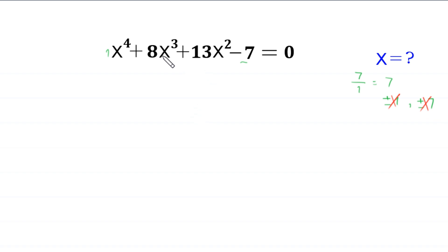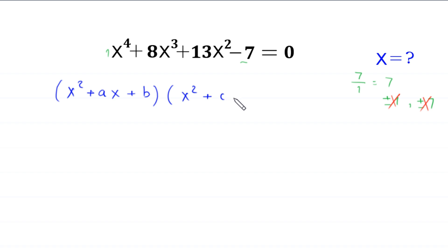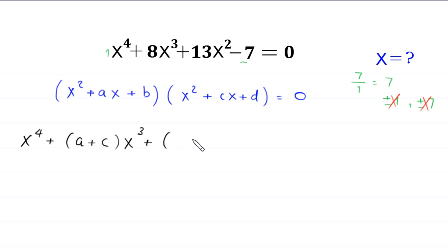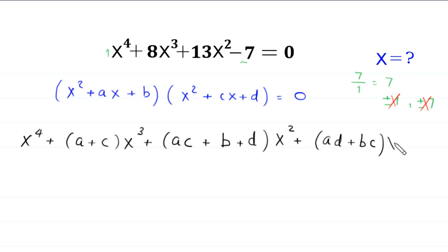We suppose that the expression on the left-hand side is a product of two quadratic factors: x squared plus a times x plus b, times x squared plus c times x plus d, is equal to 0. If we expand this expression, this becomes x to the power 4 plus (a plus c) times x cubed plus (ac plus b plus d) times x squared plus (ad plus bc) times x plus bd, is equal to 0.